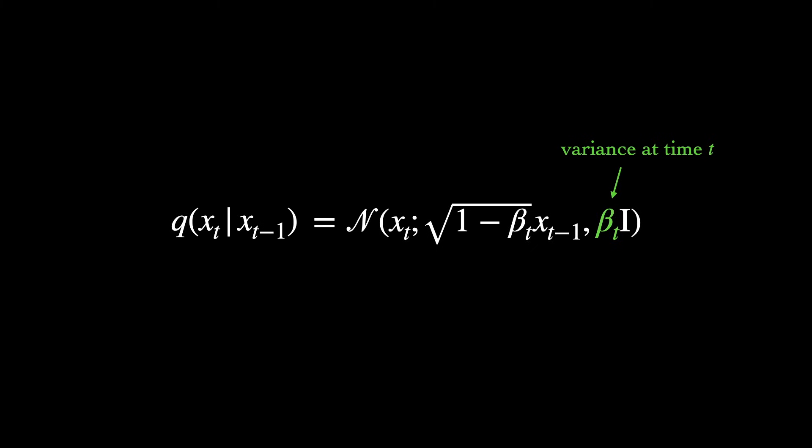Typically, these variances are treated as hyperparameters and follow a fixed schedule for a particular training run. Beta generally increases with time and is restricted to be between 0 and 1, meaning that this coefficient, radical 1-beta T, will likewise be non-zero but less than 1, bringing the mean of each new Gaussian closer to 0.